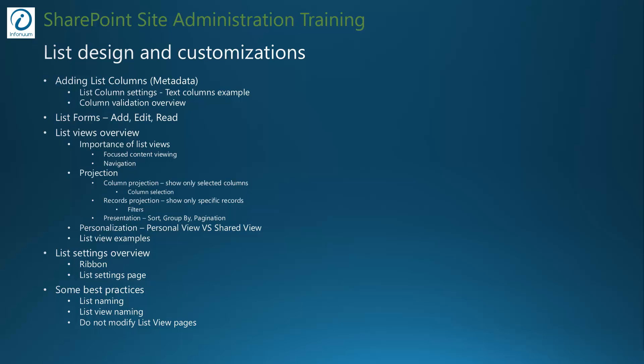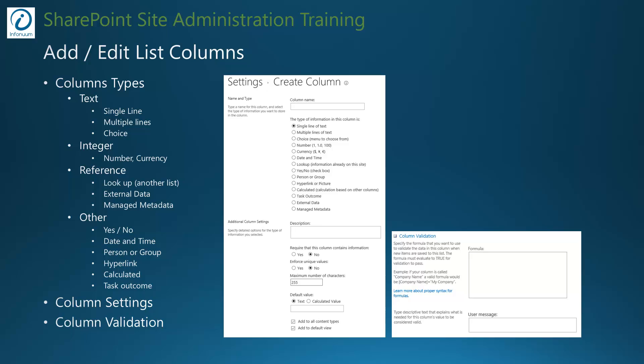Let's see how this goes in demo. While adding a new column to a list or modifying an existing column, you have the option to choose column types and specify settings exposed by that column. On top of that, you can apply custom validation to that column using a column validation formula.